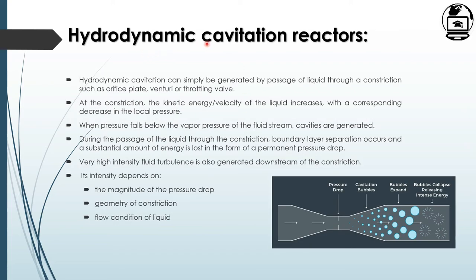In the hydrodynamic cavitation reactor, cavities are generated when liquid moves through a constriction such as an orifice plate, venturi, or throttling valve. When liquid moves through the constriction, kinetic velocity and energy increase and pressure drops, generating cavities. Boundary layer separation occurs, and substantial energy is lost as permanent pressure drop. Very high intensity fluid turbulence is generated downstream, with intensity depending on the magnitude of pressure drop, geometry of constriction, and flow conditions.